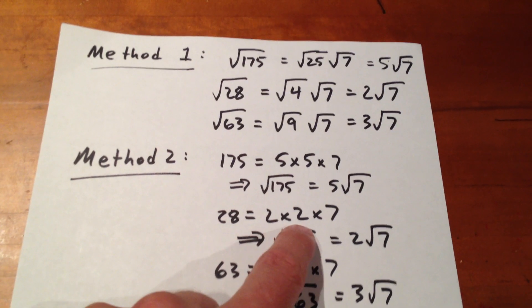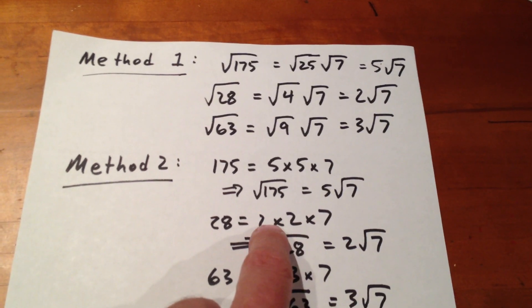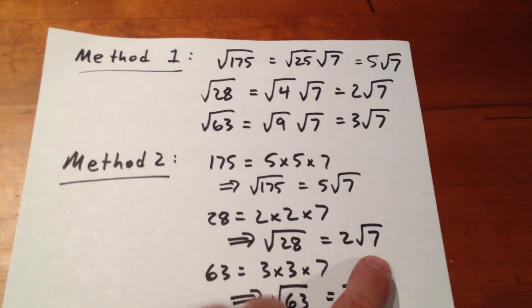28 is equal to 2 times 2 times 7, so root 28 is 2 root 7, because the 2 comes outside and the 7 stays inside.